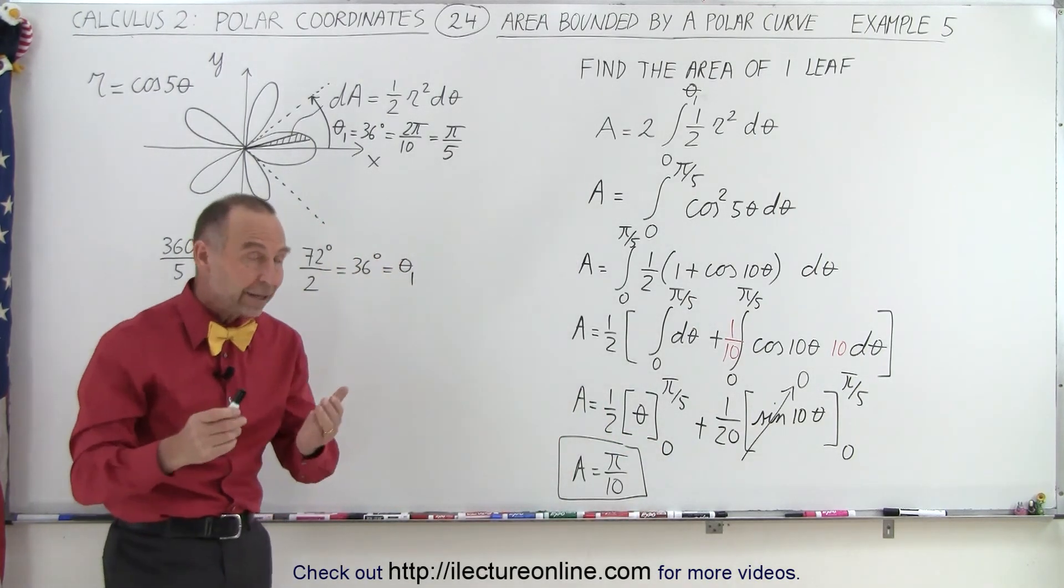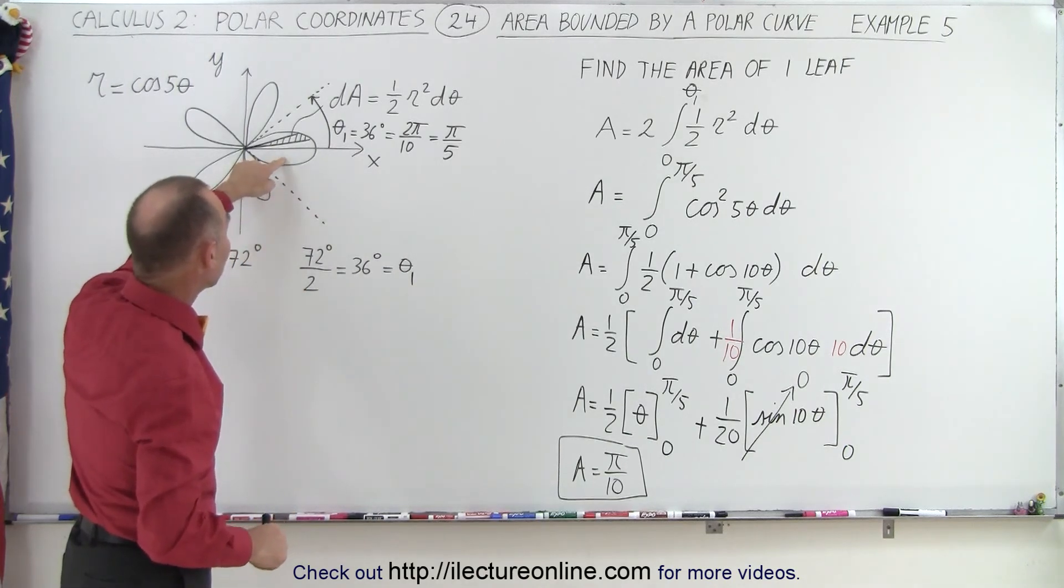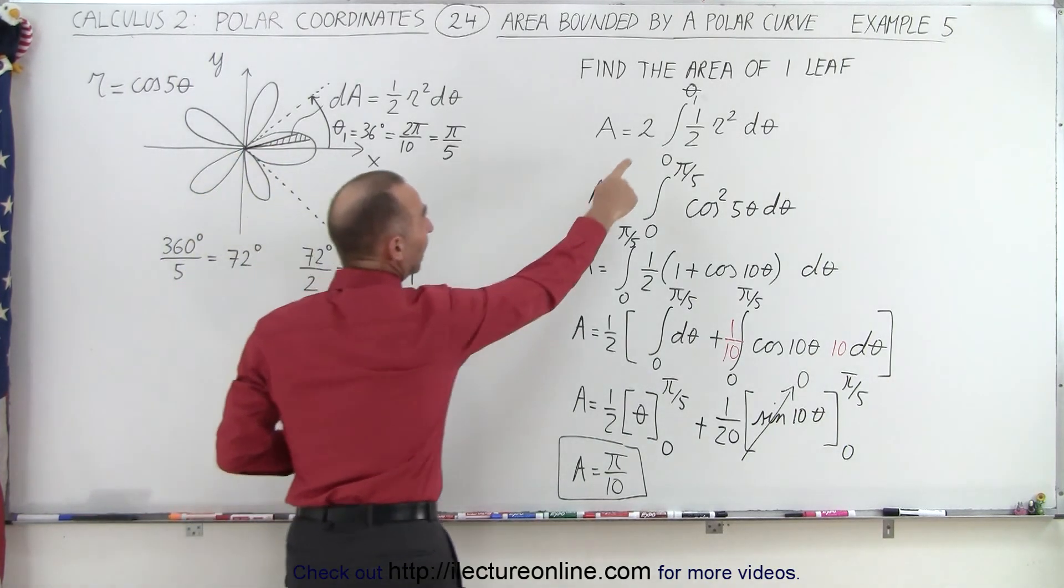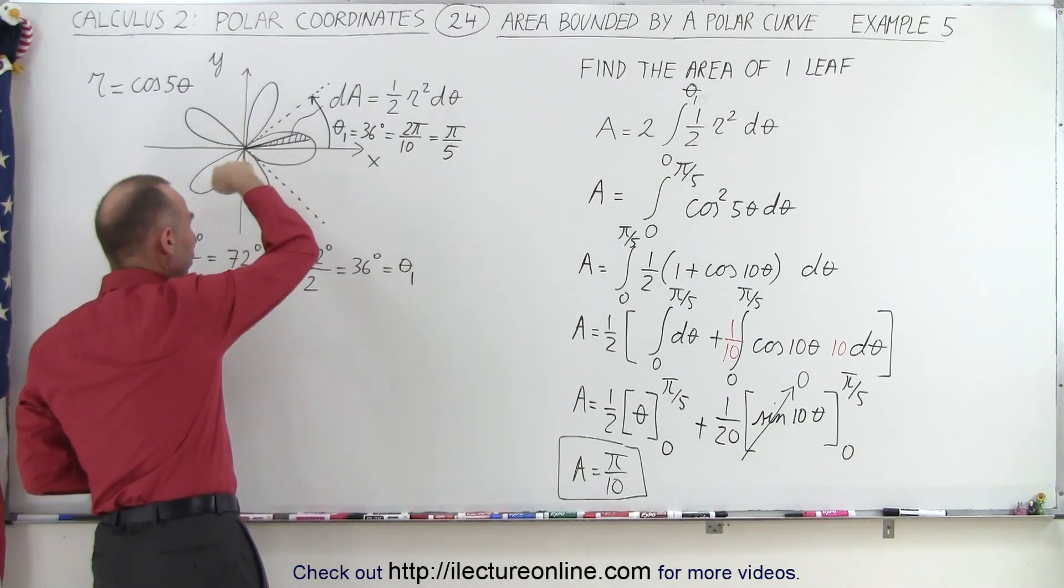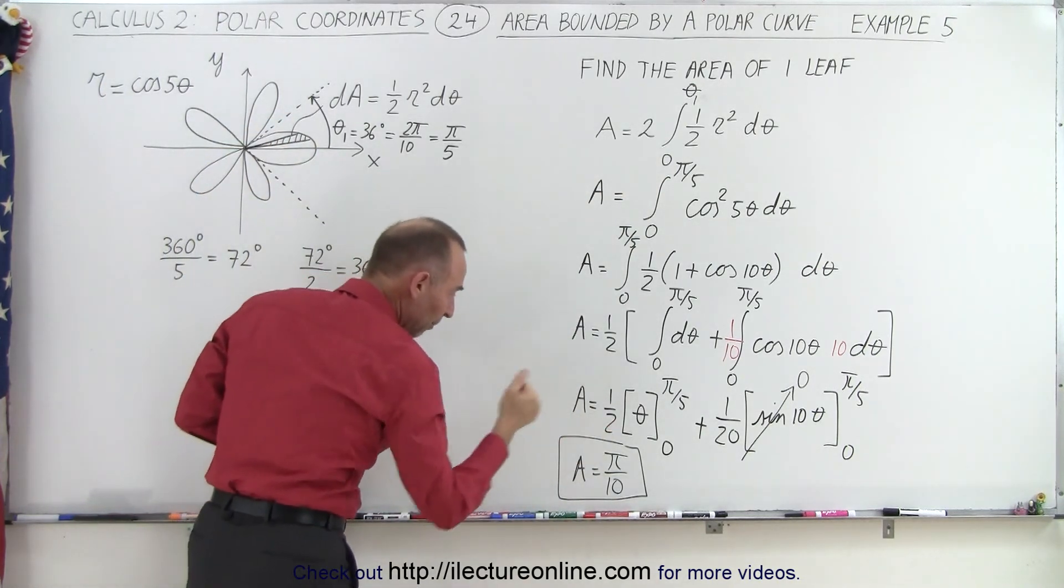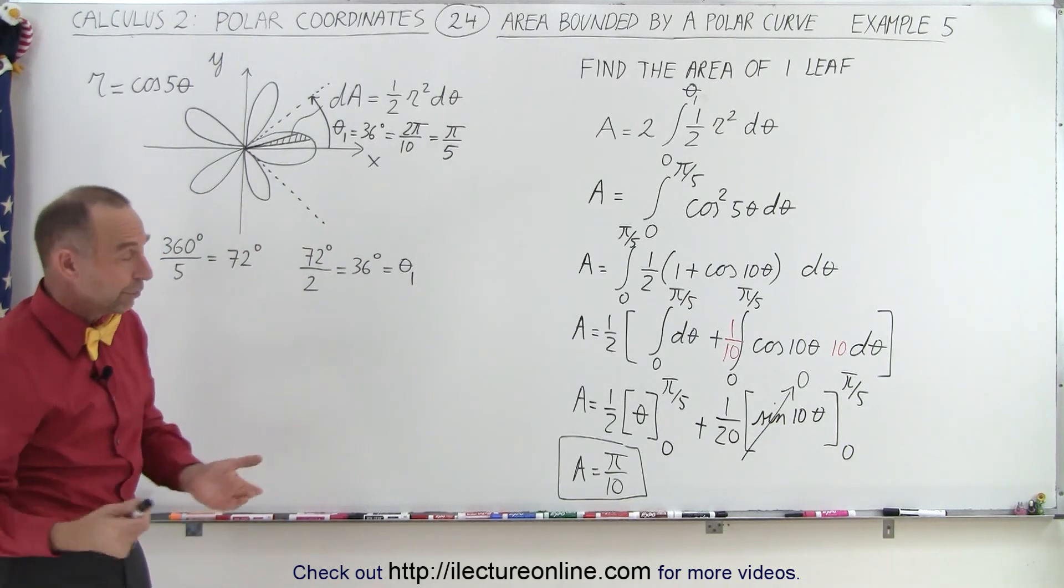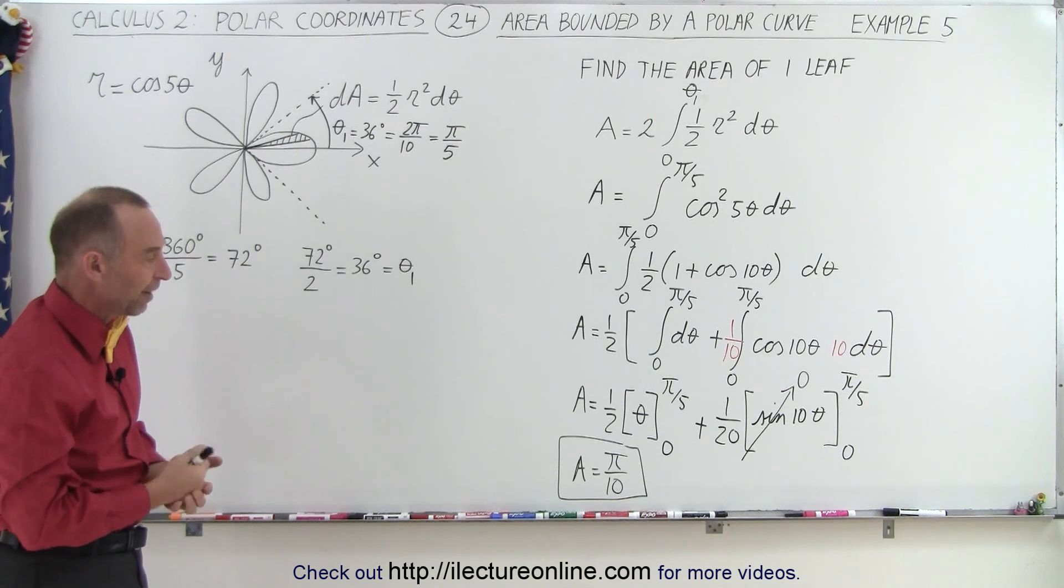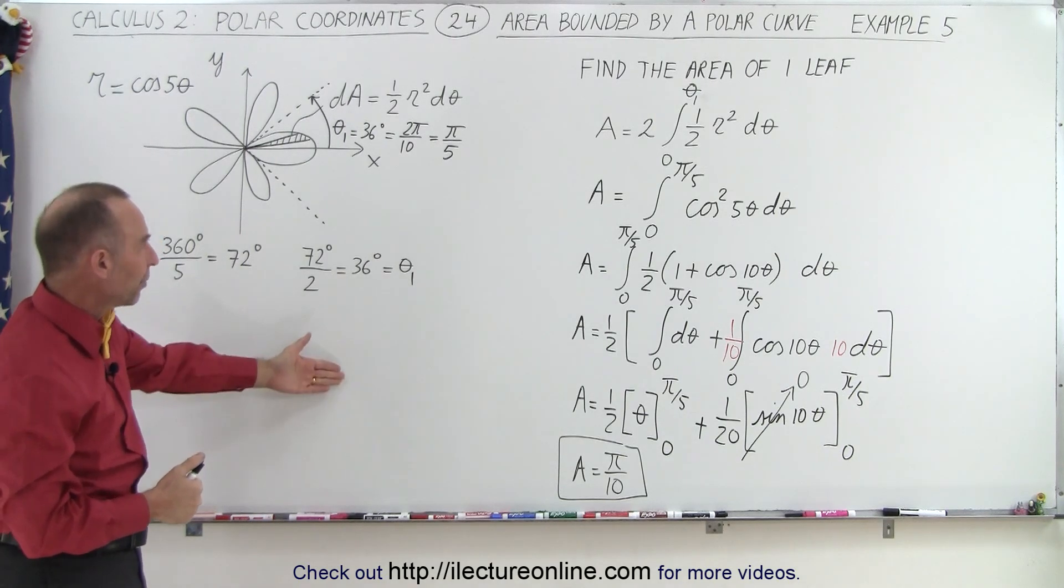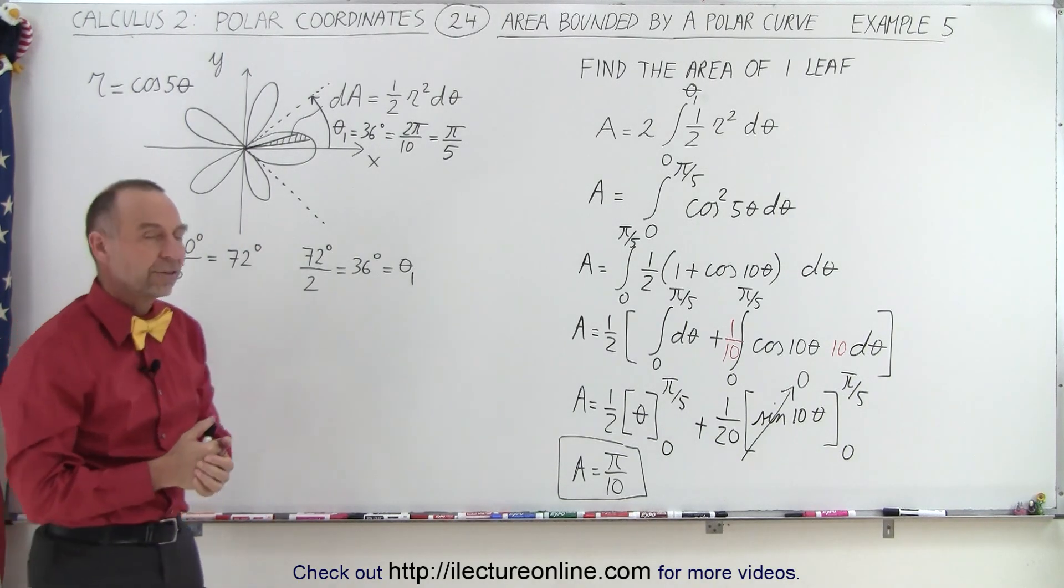Now, that would be the area of an entire leaf, one of the leaves, for both sides, because we took care of the bottom side by multiplying the integral by two. If we want to have the area of the entire rose, all five leaves, we simply multiply that times five, and we get the area of all of them together would be pi over two, instead of pi over ten. So, anyway, that's how we find the area of a single leaf.